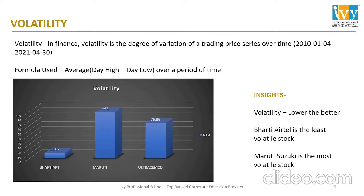The first parameter is volatility — it means the variation of trading price over a period of time. The timeframe considered here is from 4th January 2010 till 30th April 2021. The formula I've used is the average of (day high minus day low) over that period of time. Let me show you the code.